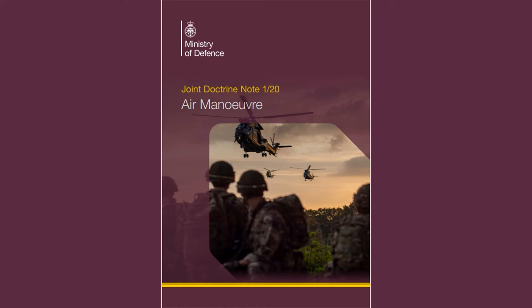Intended audience for this document. JDN 1/20 Air Maneuver is aimed at commanders and staff involved in planning and executing air manoeuvre operations. Structure. JDN 1/20 is divided into five chapters. Chapter one introduces air manoeuvre, its attributes, types of air manoeuvre operations, their forces and employment. Chapter two covers the principles of air manoeuvre and the planning process. Chapter three details operational considerations for air manoeuvre. Chapter four covers planning and executing airborne operations. And chapter five covers planning and executing air assault operations.